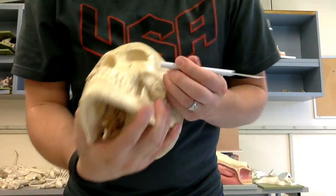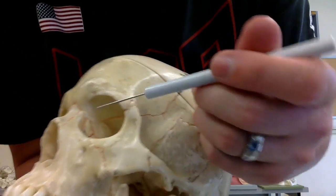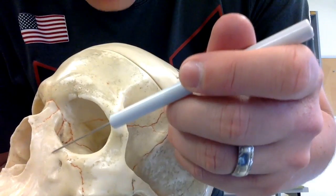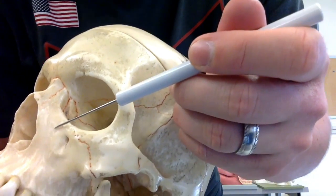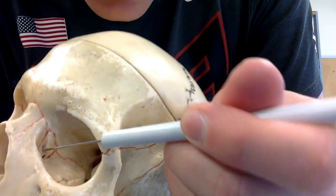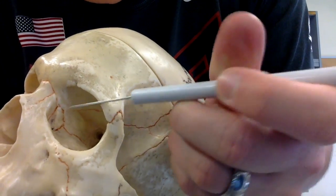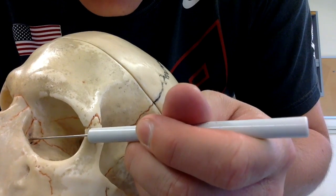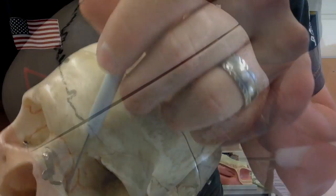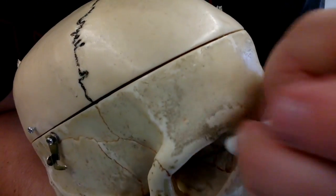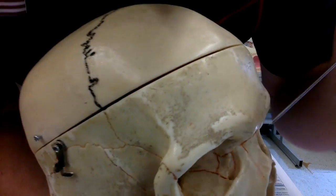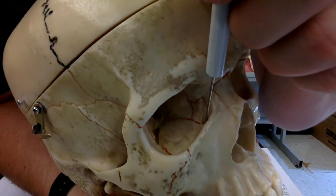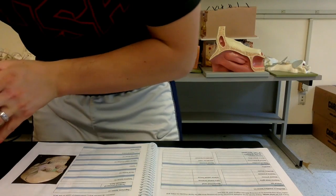The lacrimal bones are going to be these tiny little bones medial to the maxilla. We have the maxilla right there in the front, and then this tiny little bone is the lacrimal bone, which has a groove in it known as the lacrimal sulcus, leading to the nasal lacrimal canal, which is actually part of the maxilla.